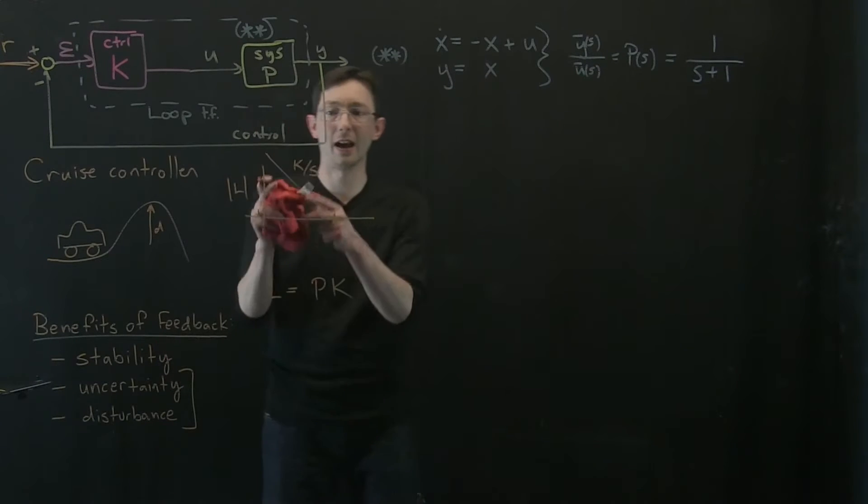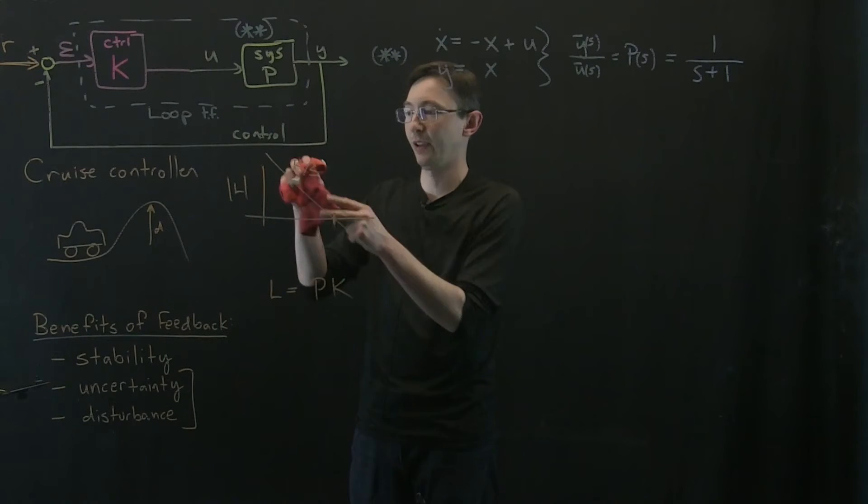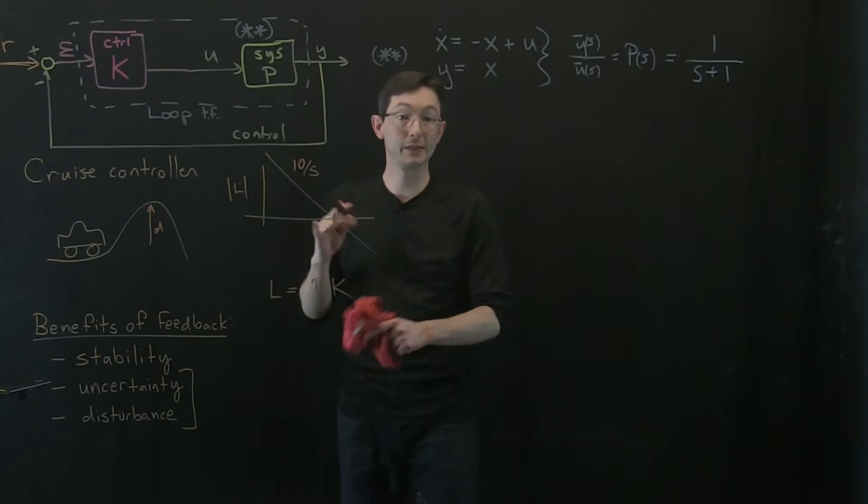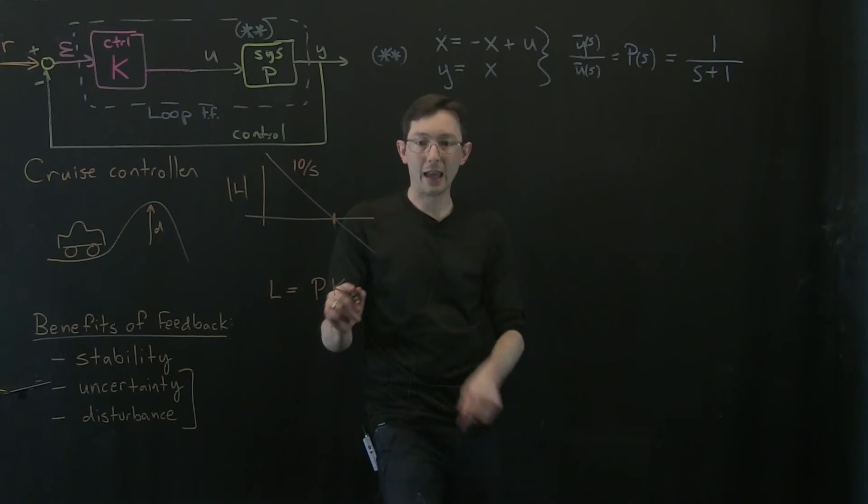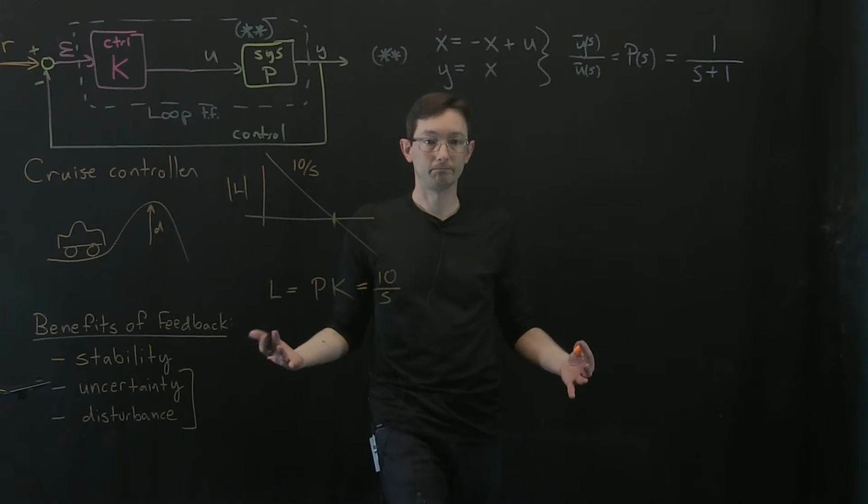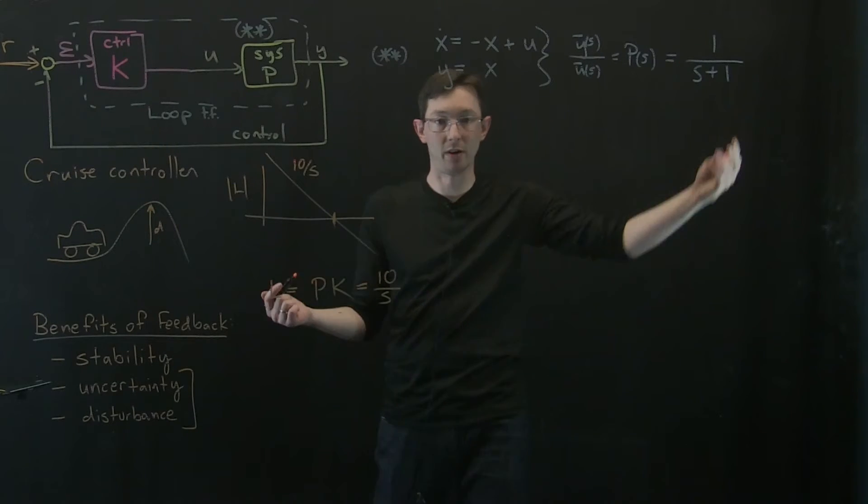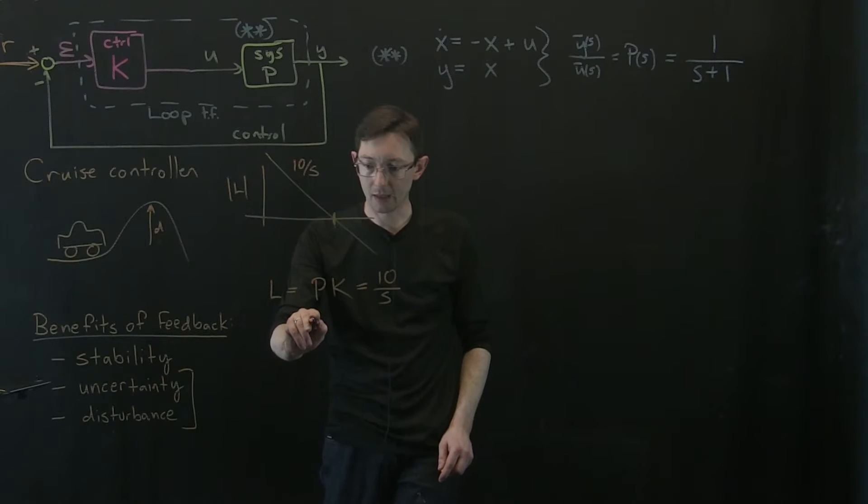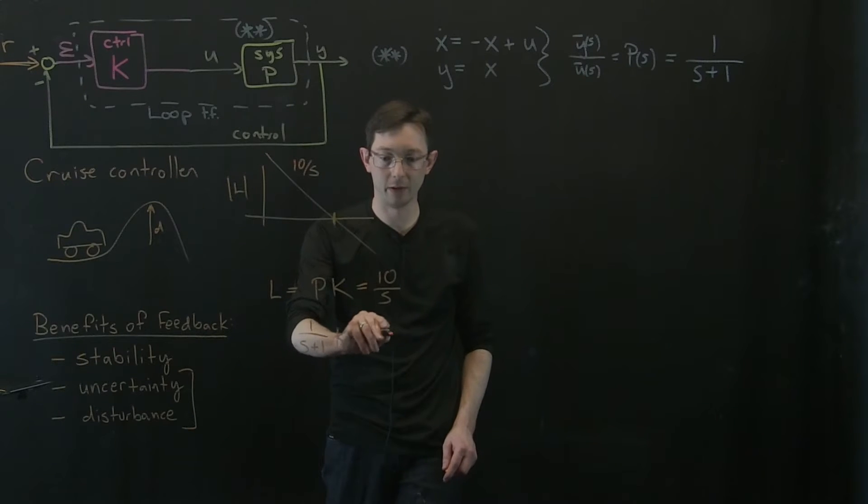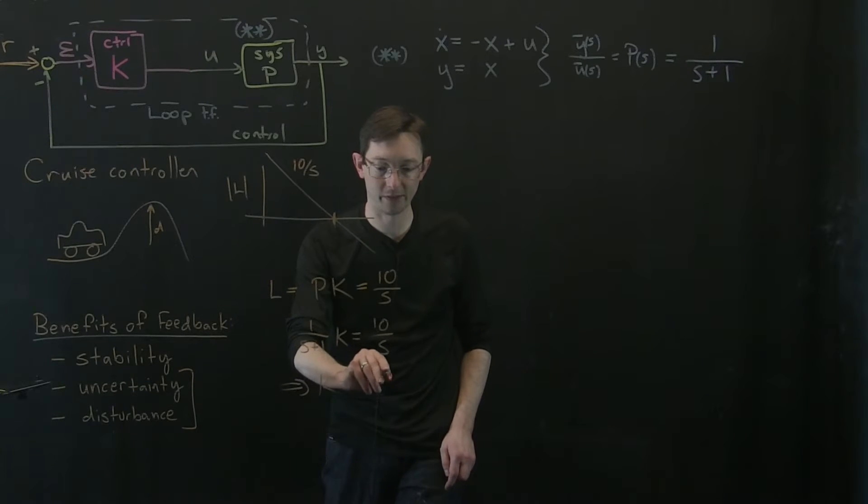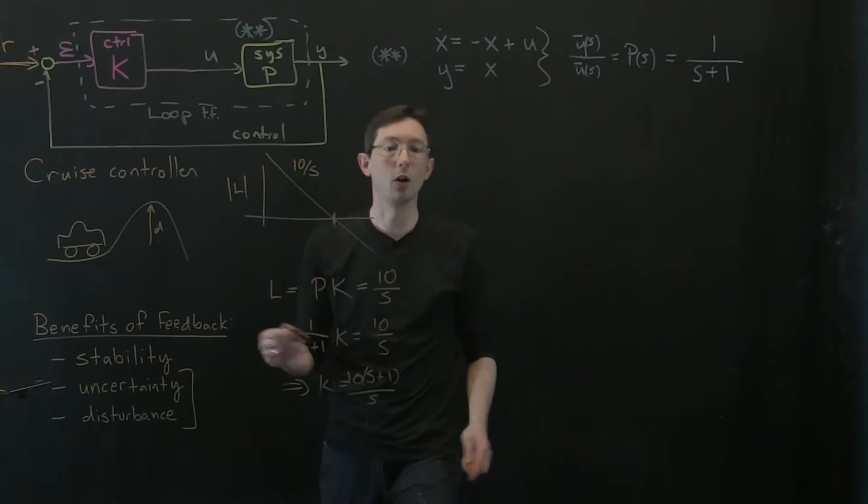Sorry, I should have chosen a different number k. I don't mean k the transfer function, I mean a number like 10. Let's say this is 10, 10 over my Laplace variable s. Then I want p times k to equal 10 over s. And I know what p is - p is 1 over s plus 1. So I can say 1 over s plus 1 times k equals 10 over s. And so that means that k equals s plus 1 times 10 over s.